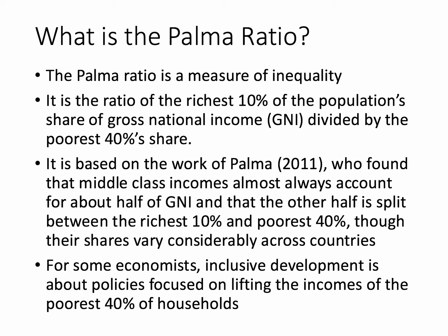The Palma Ratio is a measure of inequality and it's measured as follows. It's the ratio of the income of the richest 10% of the population divided by the income of the poorest 40%. So it's basically the top 10% richest people's income divided by the income of the bottom 40%. Based, as you'd expect, on the work of Palma.